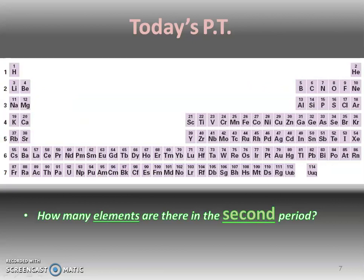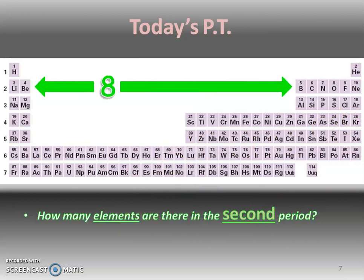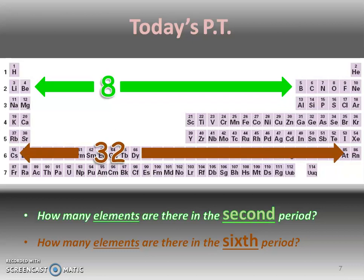Today's periodic table should really look like that. Remember those bottom two rows really are part of the main periodic table but they're pulled out just to save space. How many elements are there in the second period? Hopefully you came up with eight. How about the sixth period? Technically, the sixth period has 32 elements — it includes the main section plus those two rows on the bottom.